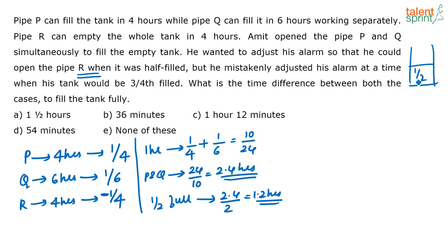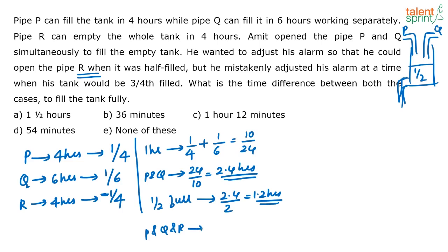At 1.2 hours, Amit has opened the third pipe R. Till now pipe P and pipe Q are filling, and now the third pipe is also opened once the tank is half full. When P, Q and R together are working, the net work done is 1/4 plus 1/6 minus 1/4, because these two are filling and this one is emptying. That equals 1/6 — whatever work P is doing is being cancelled by R.